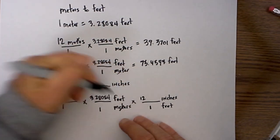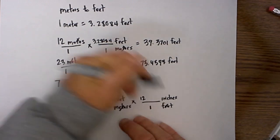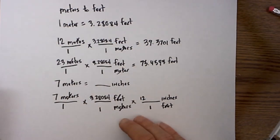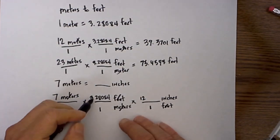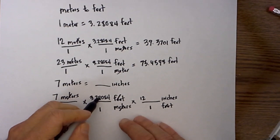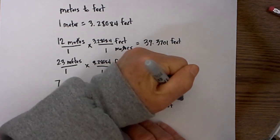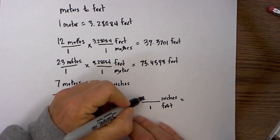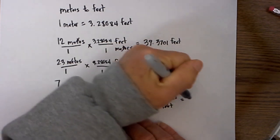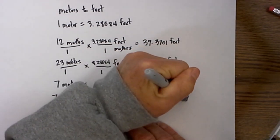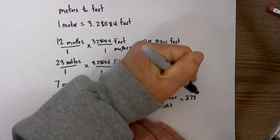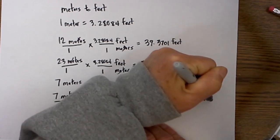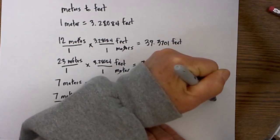Well I know that 1 foot is equal to 12 inches. Let's see what cancels: meters cancel, feet cancel, I am left with inches. Then 7 times 3.28084 times 12 — this times this times this is equal to 275.591 inches.